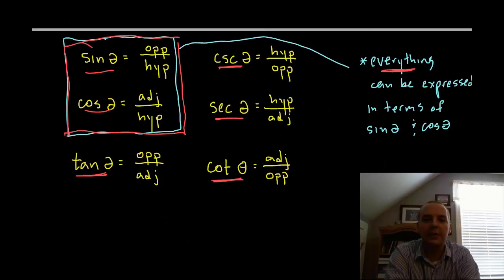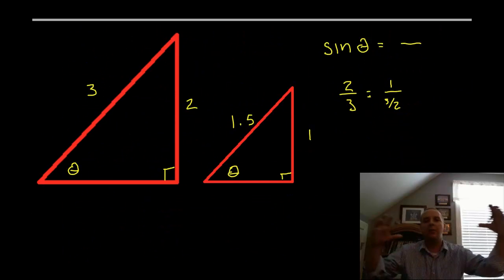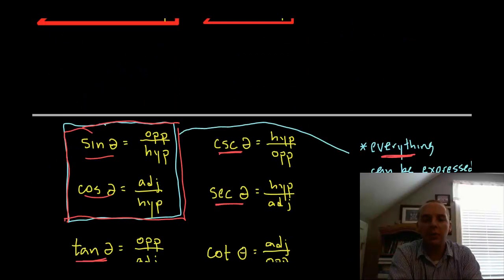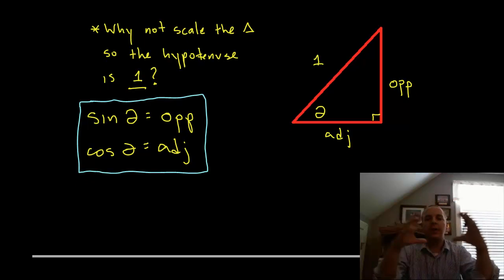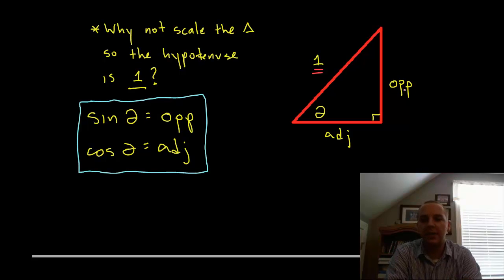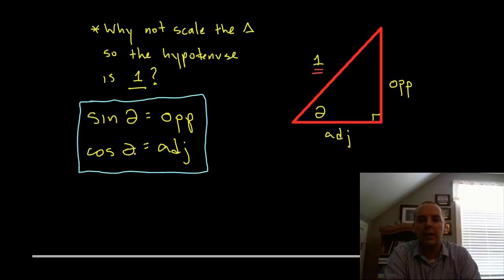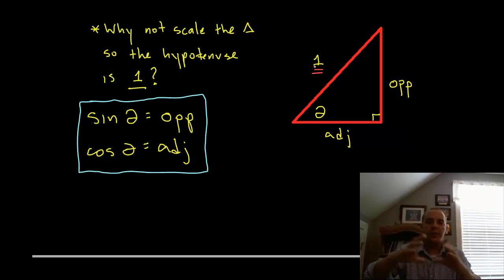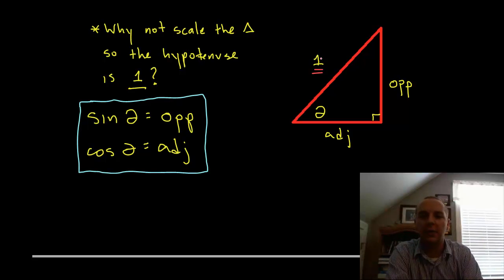Since the ratio stays the same no matter how the triangle is scaled, let's be smart about it and scale the triangle so that the hypotenuse has a length of one. If the hypotenuse equals one, then sine of theta — which is opposite over hypotenuse — is just the length of the opposite edge. If the opposite edge is, say, five, then five over one is just five, eliminating a lot of fractions. Cosine theta likewise would just be however long the adjacent edge is. Sine and cosine are not dependent on the size of the triangle, so we can scale freely.